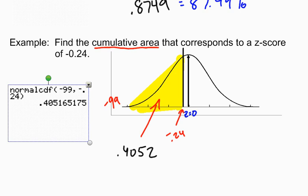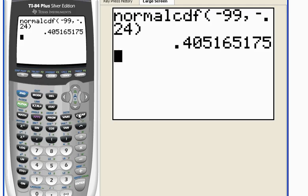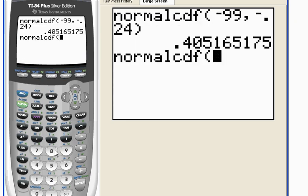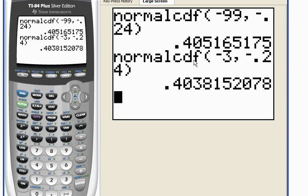Now, just so you can see, if I go back and do this again and hit second vars number 2 and use my normal distribution, let's say I only went and used a left-hand boundary of negative 3 and then comma negative 0.24. Close my parentheses. See how it's close? It's not exactly. I've got 0.4051, and here I've got 0.4038.